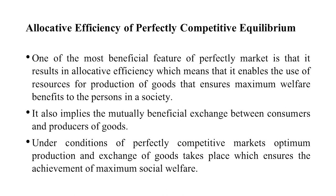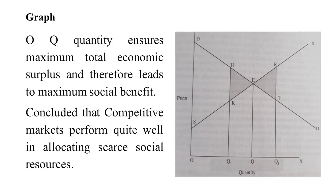It is generally assumed that in perfectly competitive markets, optimum production and exchange of goods takes place, which ensures the achievement of maximum social welfare. With the help of a graph, you can see that OQ quantity is the point of maximum total economic surplus and therefore leads to maximum social benefit. It is concluded that competitive markets perform quite well in allocating scarce resources.